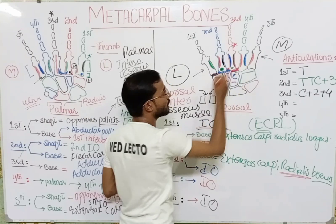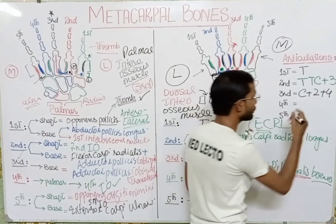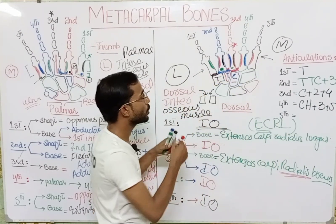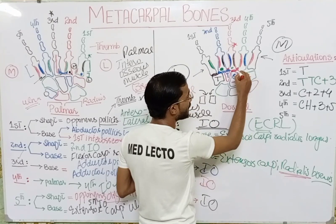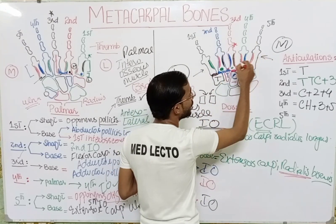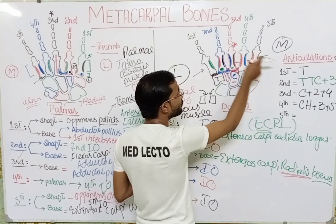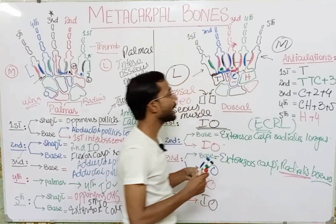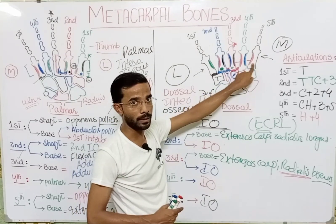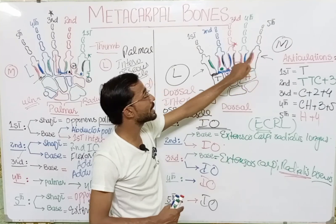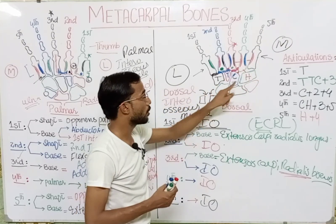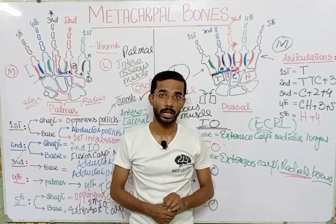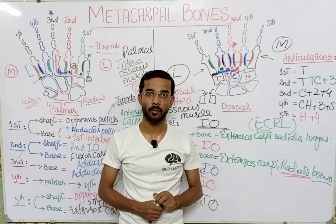The fourth metacarpal articulates with the capitate, hamate, and the third and fifth metacarpals, since the fourth lies between the fifth and the third. The fifth metacarpal articulates with the hamate and the fourth metacarpal, as the hamate lies beneath the fifth and the fourth lies beside it. These are the different articulations of the metacarpal bones. If you have any questions, you may ask in the comment section. Thank you so much.